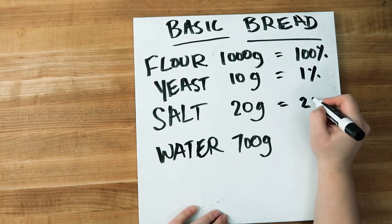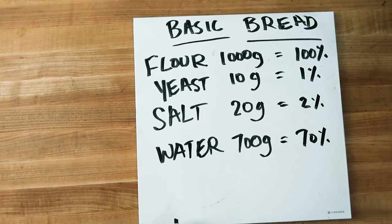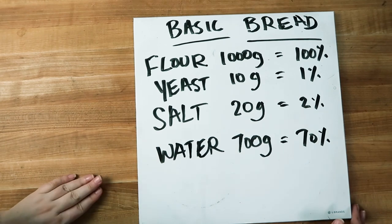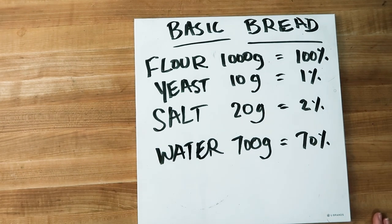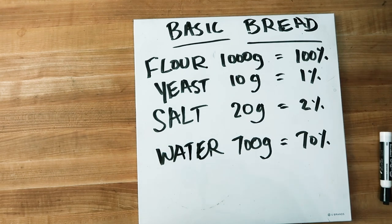When I do the same for the salt I get 2 percent, and for the water I get 70 percent. So now you can see our baker's percentage formula for this recipe. This formula can now be used to make this recipe in any size — so if you need to scale the recipe up or down, this formula is very helpful. I also find these formulas really helpful for comparing recipes; if I really like how moist the interior texture is of one bread, it's helpful to look at that in comparison to other recipes to see what might be causing the difference.